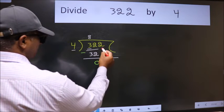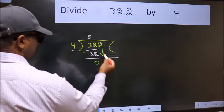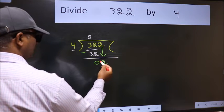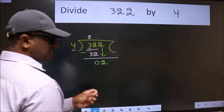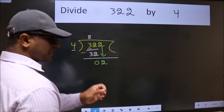After this, bring down the number beside. So, 2 down. After this step, the mistake happens, and the mistake is this.